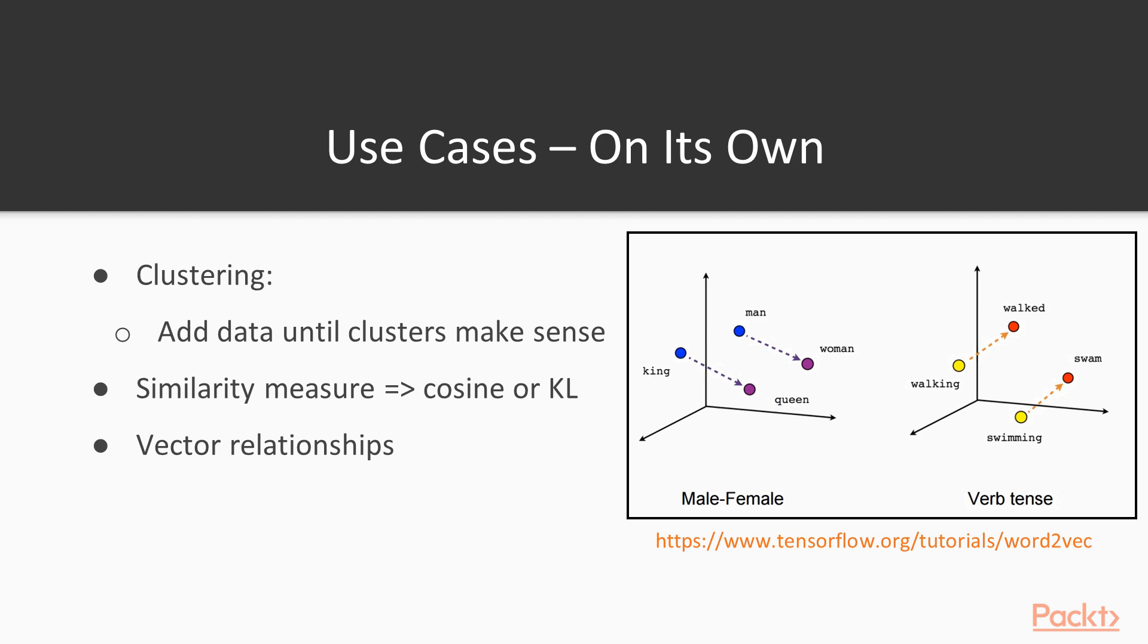And yeah, in one breath I have to mention of course that the distances between the vectors can also be meaningful. You could for example use the cosine similarity between two vectors to see how closely related the words are.